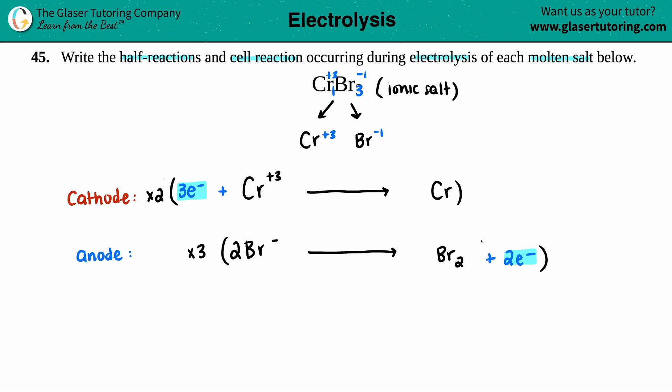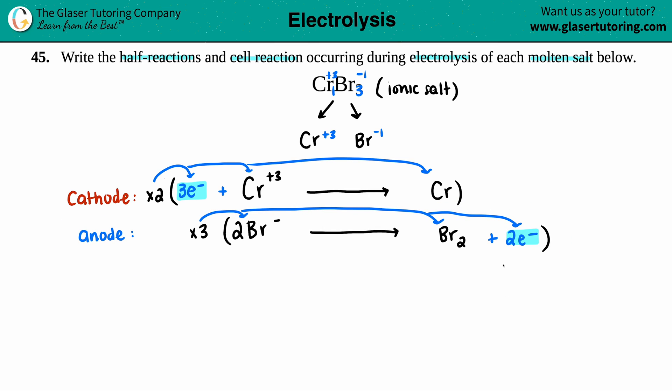But then you've got to be fair: if you're multiplying this by two, I have to multiply all the other substances by two, and the same thing with the three. That's why I said the numbers will work out in the end. Since we have to change both of them, I'm just going to rewrite the equations. The new cathode would be 6e⁻ + 2Cr³⁺ yields 2Cr, and the anode would be 6Br⁻ yields 3Br₂ + 6e⁻.